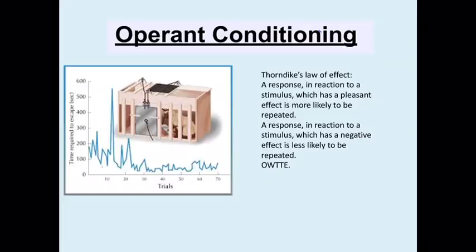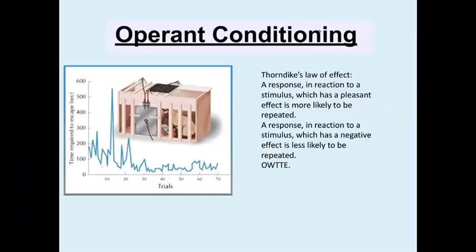Second way of learning: operant conditioning. Best to start with Thorndike's Law of Effect: if a response to a stimulus has a pleasant or positive outcome, it is likely to be repeated; if it has a negative or unpleasant outcome, it is less likely to be repeated. He used a puzzle box — a little box you shove a cat in, and the cat has to discover loops and pulleys to escape and get a fishy reward. He timed how long it took, finding that the more often they did it, the shorter the time, because they learned those responses had a pleasant outcome.